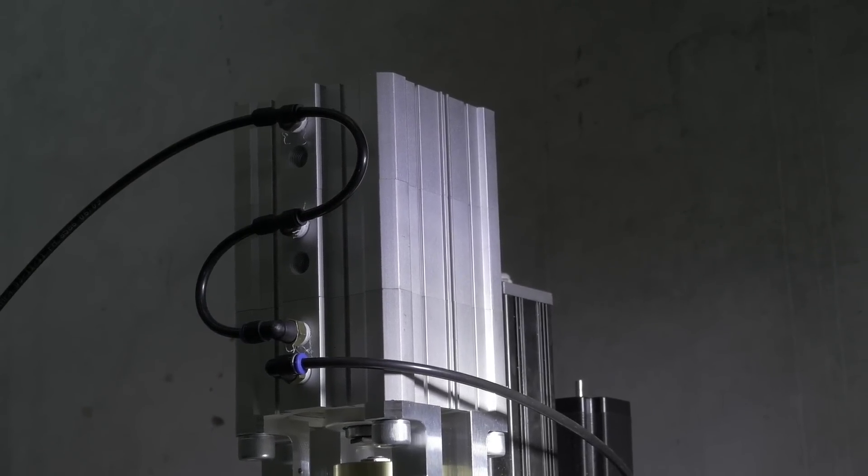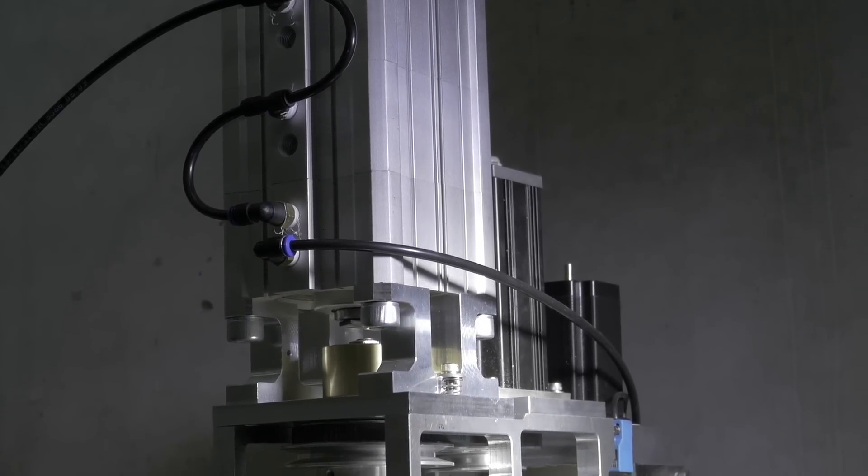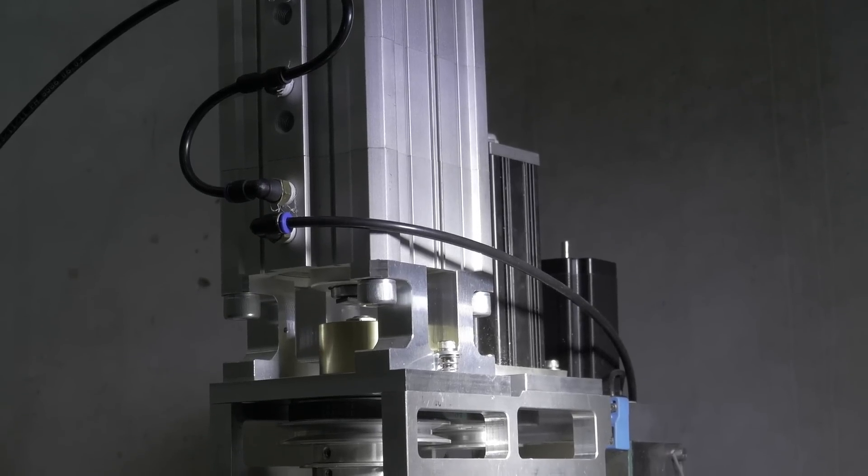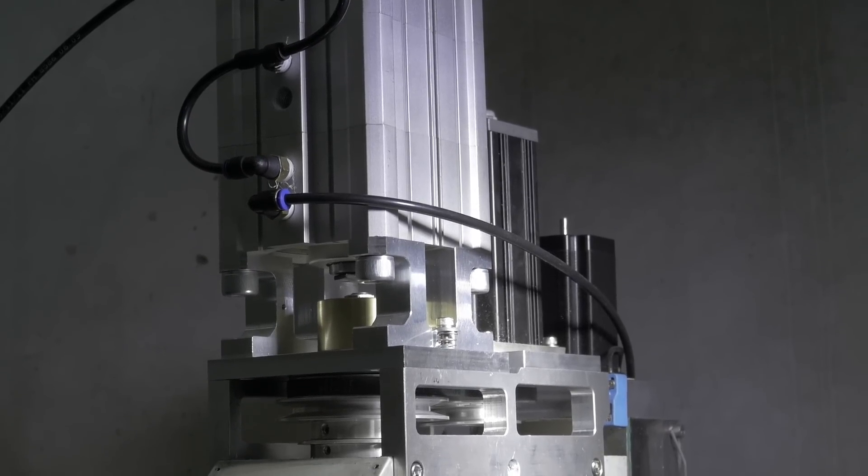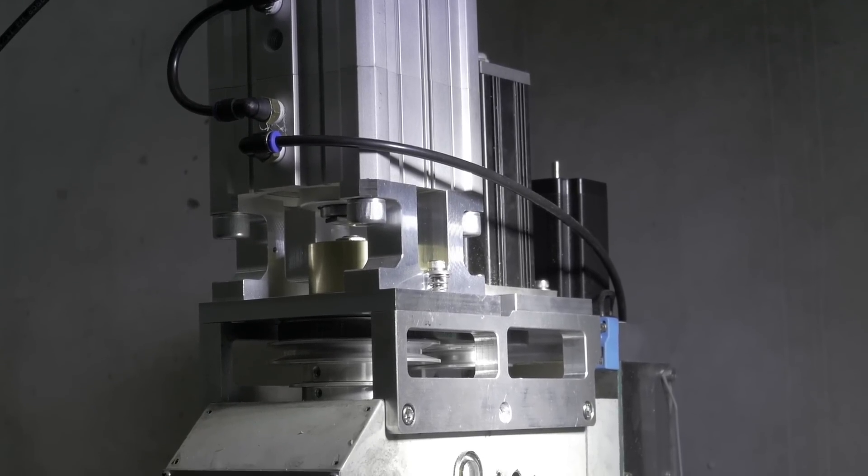So here we have the air cylinder all plumbed in. I've just got a standoff which I machined. It bolts to the underside of the cylinder, and then that bolts onto another plate which the top hat presses on or is pressed against when the air cylinder is actuated.